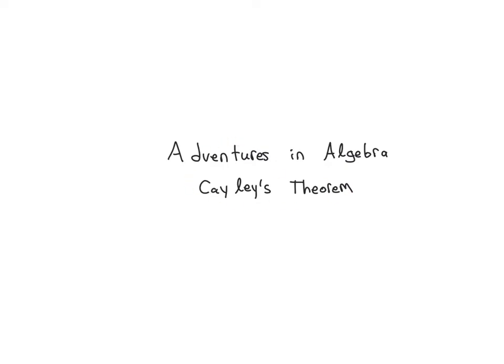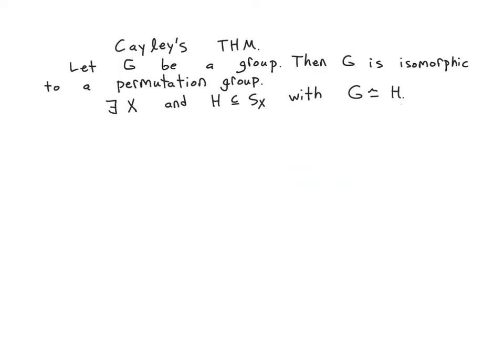In this video we're going to study Cayley's theorem. So this is the statement of Cayley's theorem. Let G be a group, then G is isomorphic to a permutation group.